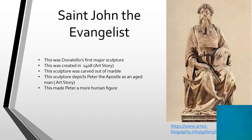Saint John the Evangelist was Donatello's first major sculpture, created in 1408. The sculpture was carved out of marble, one of his main materials. This sculpture depicts Peter the Apostle as an aged man, which made Peter more of a human figure and reflects his more humanistic style.